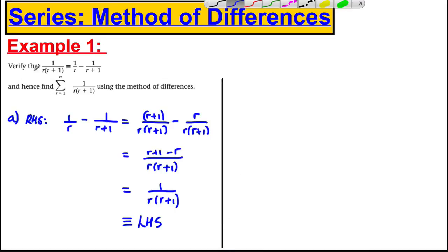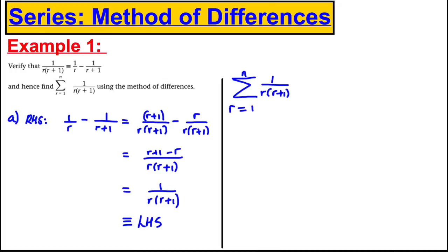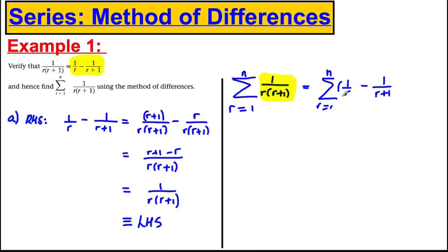Now let's go on to the next bit. Hence, work out the sum from r = 1 to n of 1/(r(r+1)). We are going to write the sum-and as a difference, as shown in the first part. These two things are the same, so it's much more useful to work out the sum for the expression written as a difference: 1/r − 1/(r+1).